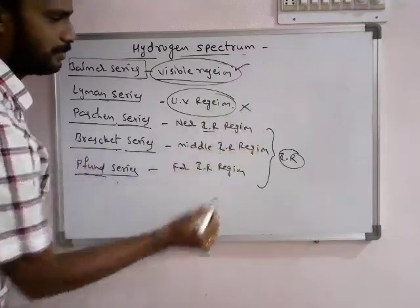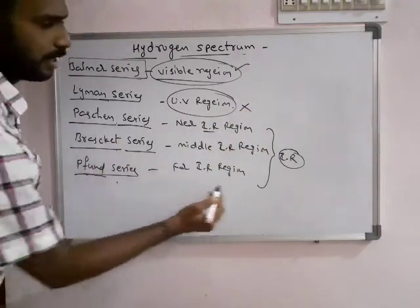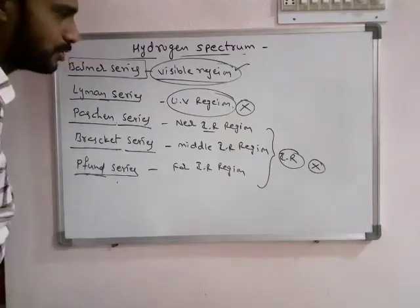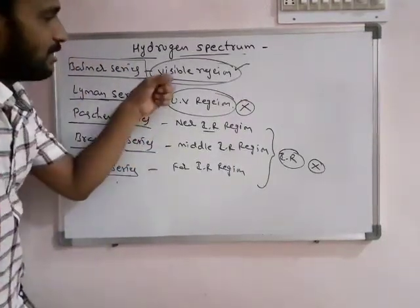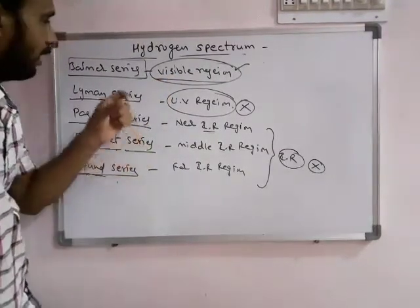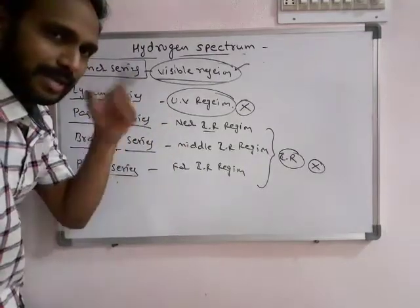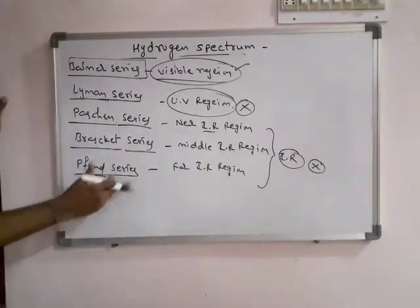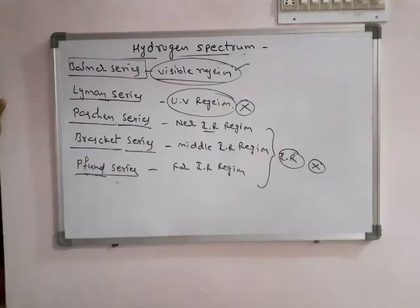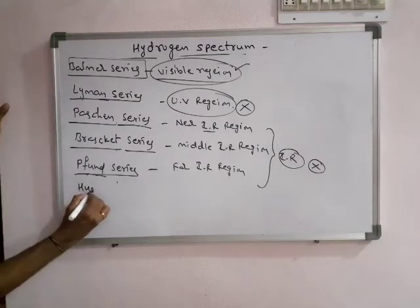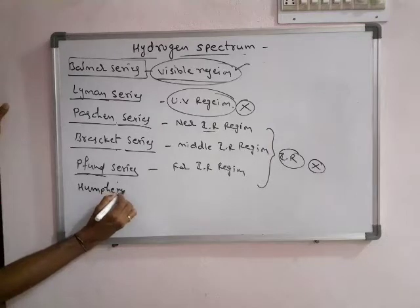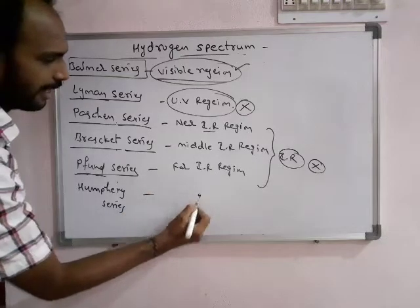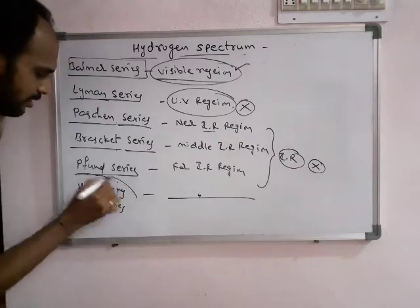We are unable to see the UV region lines directly. We are unable to see the lines in the IR region directly. We are able to see only the spectral lines of hydrogen formed in the visible region — meaning we are able to see only the Balmer series of lines directly with the naked eye. There is also another series known as the Humphreys series, observed at the far infrared region, but it is not of much importance.